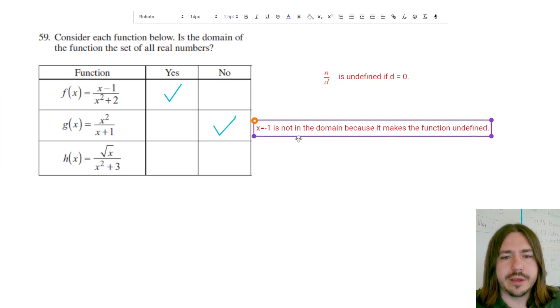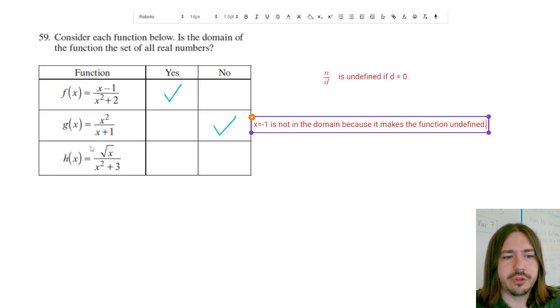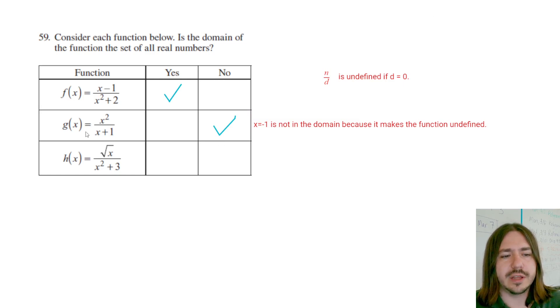Now if we look at the last one, I think this is the trickiest one. We can use similar reasoning to the first one to say, well there's no real number that will make the denominator zero, because I'm squaring that. Whether it's positive or negative, this is always going to be a positive number. If I add three to zero or any positive number, it's still going to remain positive.